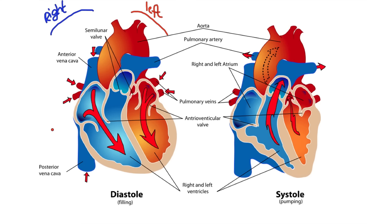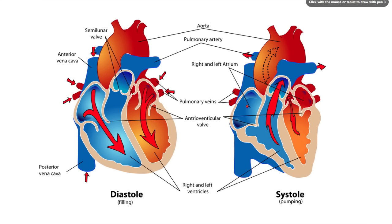Now there are a number of valves found throughout the heart and a number of parts of the heart that we need to know. The first thing I want to point out is here we have the right atrium and the left atrium. So this chamber is the left atrium, this chamber is the right atrium. And then we have the right ventricle and the left ventricle.